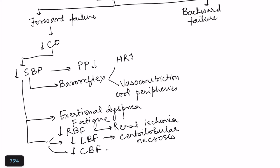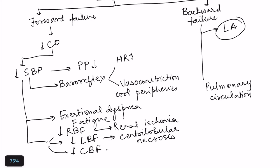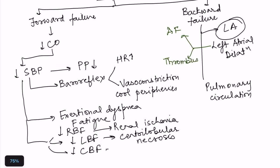Moving to backward failure in left-sided heart failure — what is behind the left ventricle? First is the left atrium, and further behind is the pulmonary circulation. Because the left ventricle is failing, the left atrium must work harder, pressure in the left atrium increases, and blood jams up in the left atrium. This leads to left atrial dilation, which increases the risk of atrial fibrillation and thrombus formation in the left atrium due to stasis of blood.